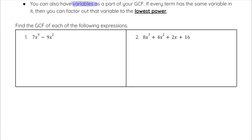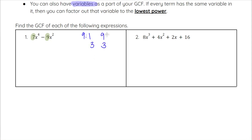So the first example, we see 7x to the fourth minus 9x squared. For the GCF, I always start by looking at the numbers — the coefficients in front of the variables. Looking at 7 and 9, they do not have any common factors other than 1. If you're not sure, think through the factors of 9: 1, 3, and 9. None of those except 1 go into 7, so there's no integer that divides into both 7 and 9 other than 1.